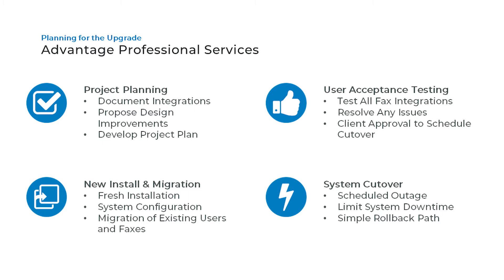Once the client approves, we schedule a cutover. During the cutover is when we have outages — that's when we actually migrate telecom to the new system. If there are any thick clients installed, that's when we upgrade them. If there are any applications pointing to RightFax, such as Epic, OnBase, or anything else, that is when we repoint them to the new system.